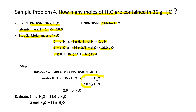The conversion factor is 1 mole over 18 grams. The given is in grams, so grams goes on the denominator. So 36 grams times 1 mole divided by 18 grams gives you 2 moles of H₂O. Evaluation: 1 mole of H₂O has a mass of 18 grams. For 36 grams, that is 2 moles — it makes sense because the mass of 2 moles is 36 grams.